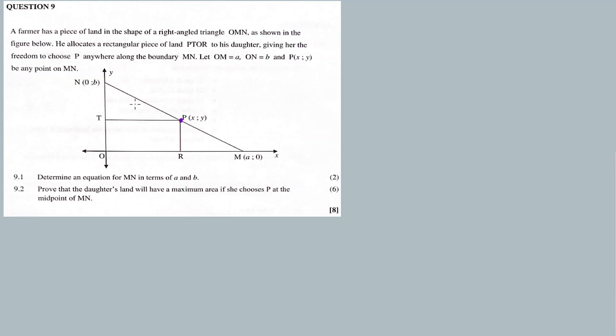You have to make sure that you cut a rectangular shape within this triangle. You have to choose any point — it can be here, it can be here, it can be here. It seems like the daughter chooses P at this point.